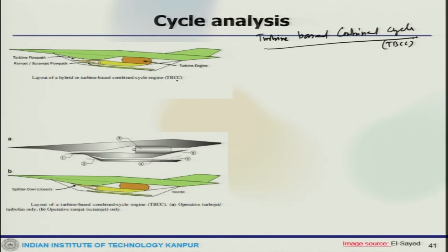This is a layout of a hybrid or turbine-based combined cycle, which is powering a future supersonic or hypersonic vehicle. This one illustrates a hybrid engine layout for lower moderate speed operation where the turbojet or turbofan engine is active while the ramjet and scramjet is inoperative. And this one is showing the ramjet or scramjet engine with inoperative turbojet during high speed operation.